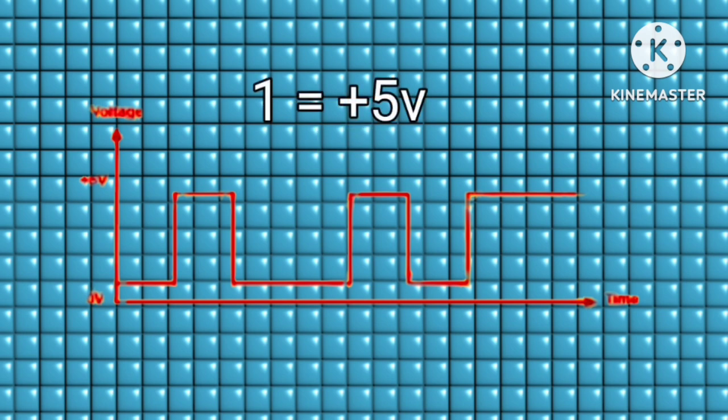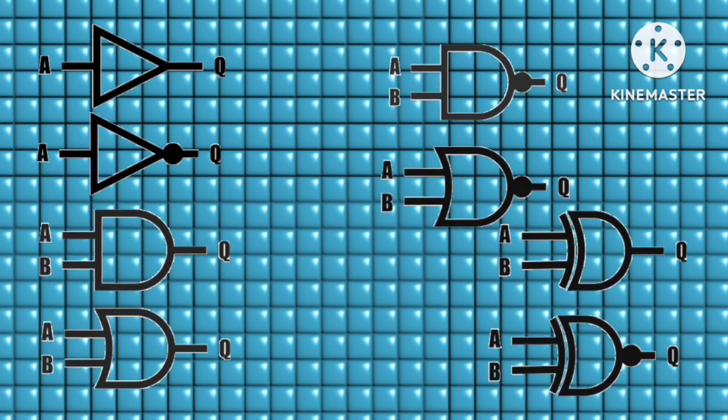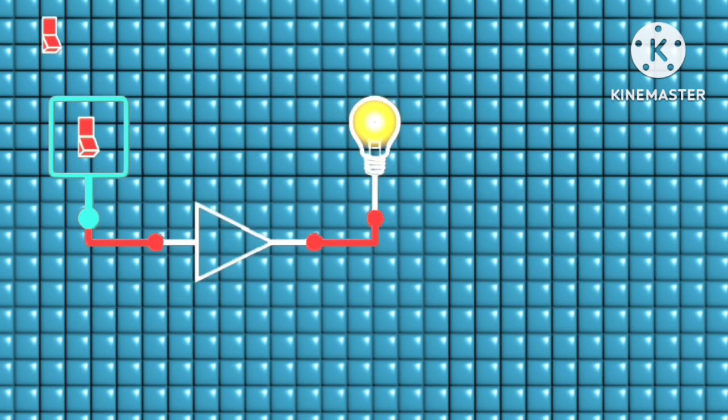With its values: 1 equals +5 volts and 0 equals 0 volts. In today's video, we are going to learn one of the most important topics in digital electronics: the logic gate. How they work, how to